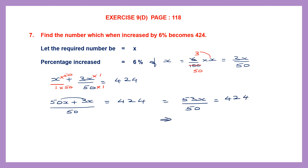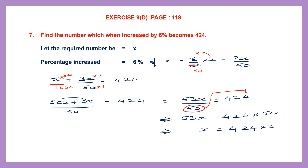Now we find the value of x. We write 53x = 424 × 50. The 50 was division on the left; when transposed to the right, it becomes multiplication. Then x = 424 × 50 ÷ 53. We check if there's something to cancel — 53 × 8 = 424.